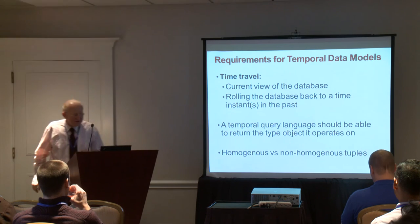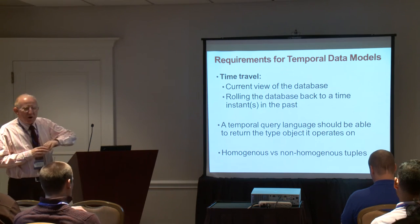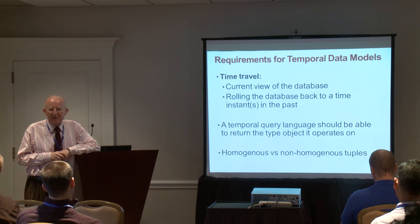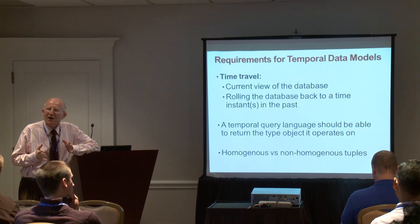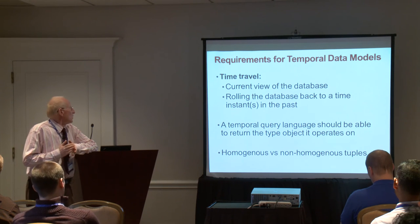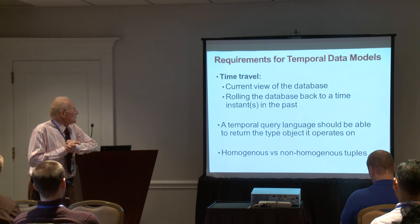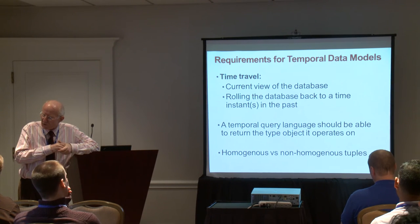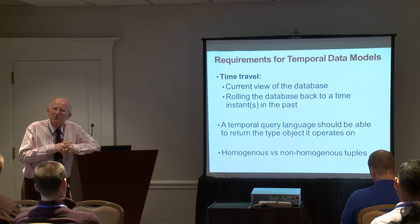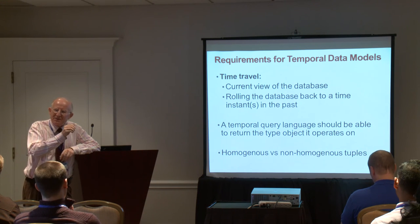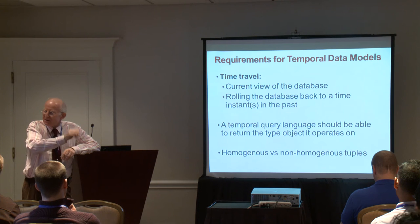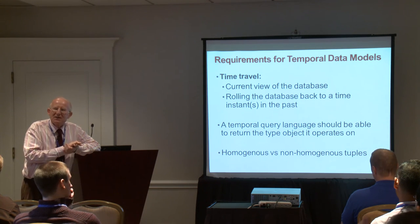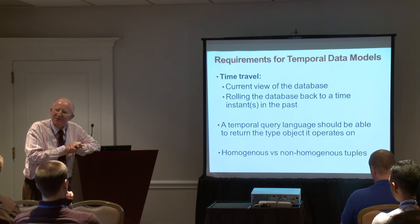The example of the integrity constraint 'salary never decreases' is comparing the database at two different times — the current time and the previous time. The current salary should be larger. The next requirement is time travel: a temporal database should be able to support time travel, which involves the current view of the data as well as rolling the database back to any time in the past and viewing it as valid at that instant.